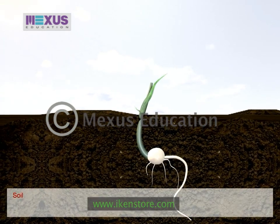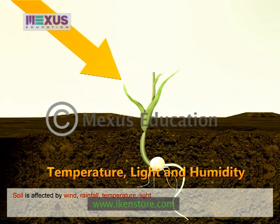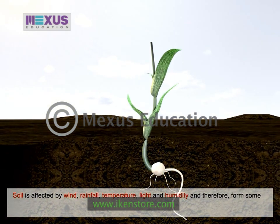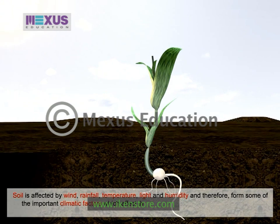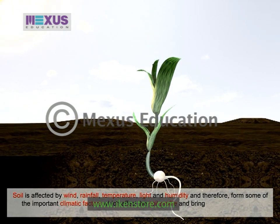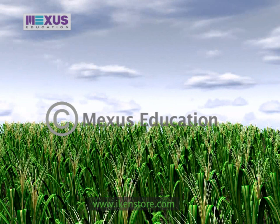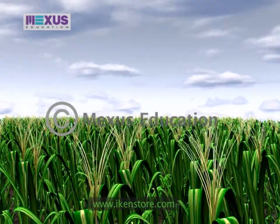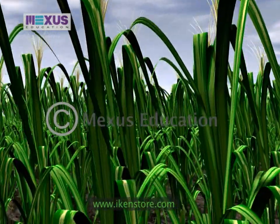Soil is affected by wind, rainfall, temperature, light and humidity. These are some important climatic factors which affect the soil profile and bring changes in the soil structure. Climatic factors as well as the components of soil determine the various types of vegetation and crops that might grow in any region.